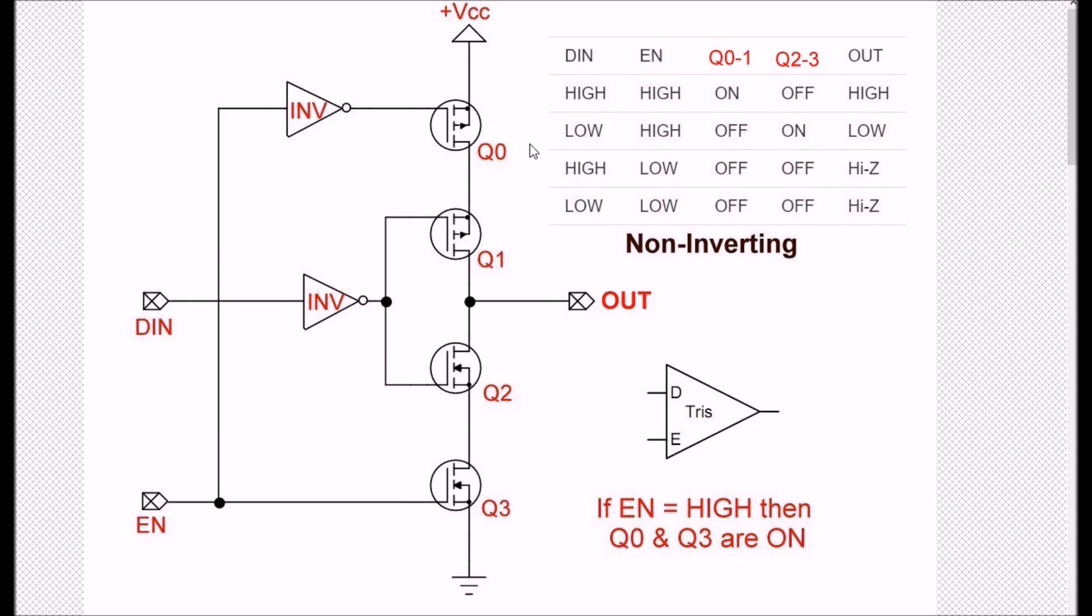Referring once again to our truth table: a low on DIN, high on enable, Q0 and 1 are turned off, Q2 and 3 are turned on, and it's a low.